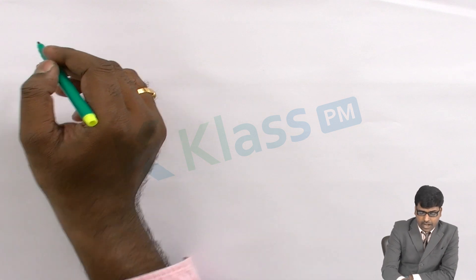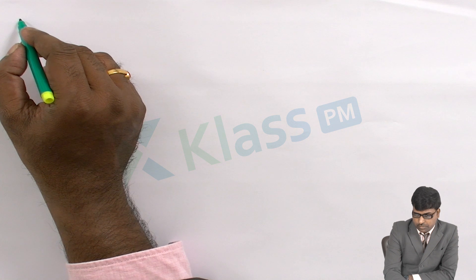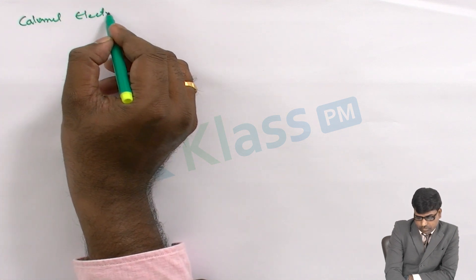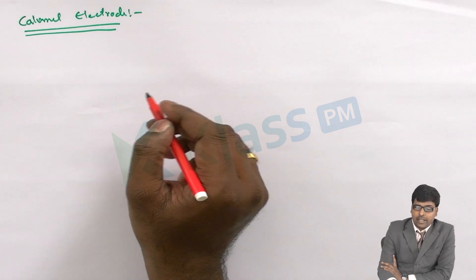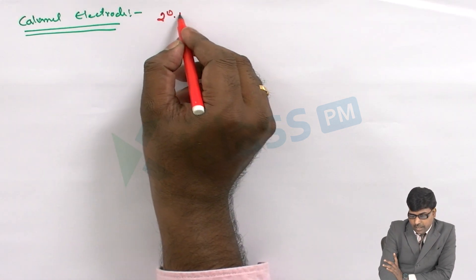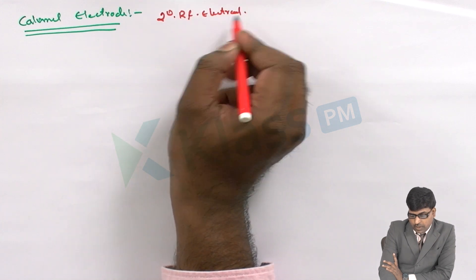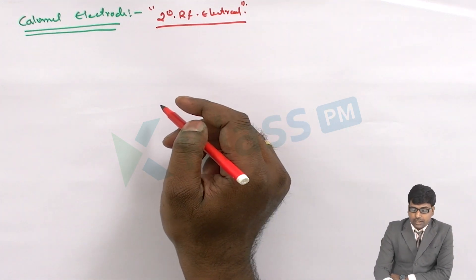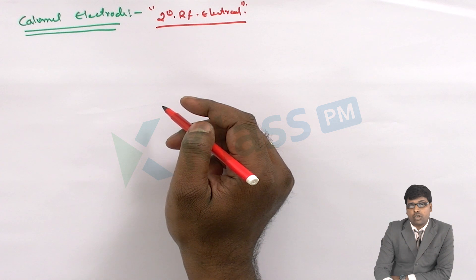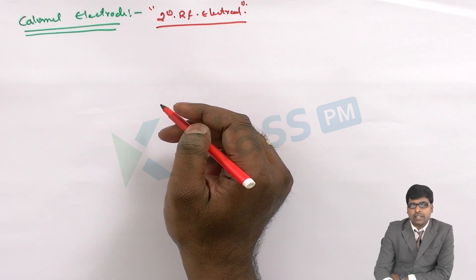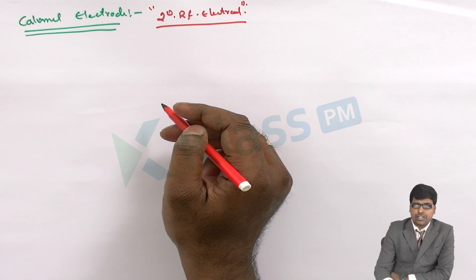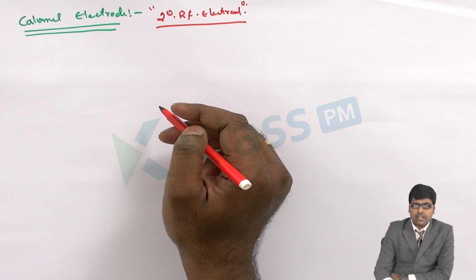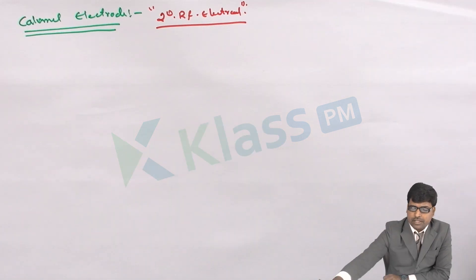The further reference electrode we have is the Calomel electrode. The Calomel electrode is a type of secondary reference electrode. It is said to be a secondary reference electrode as its electrode potential is not zero, but rather it depends on the KCl solution normality. We will see the construction of this Calomel electrode, then apply the Nernst equation, and also see the reactions involved.